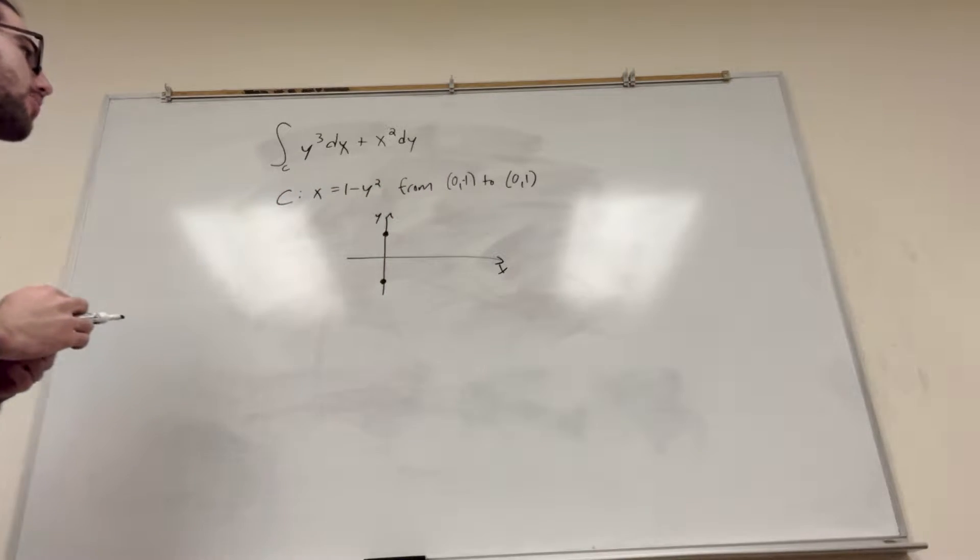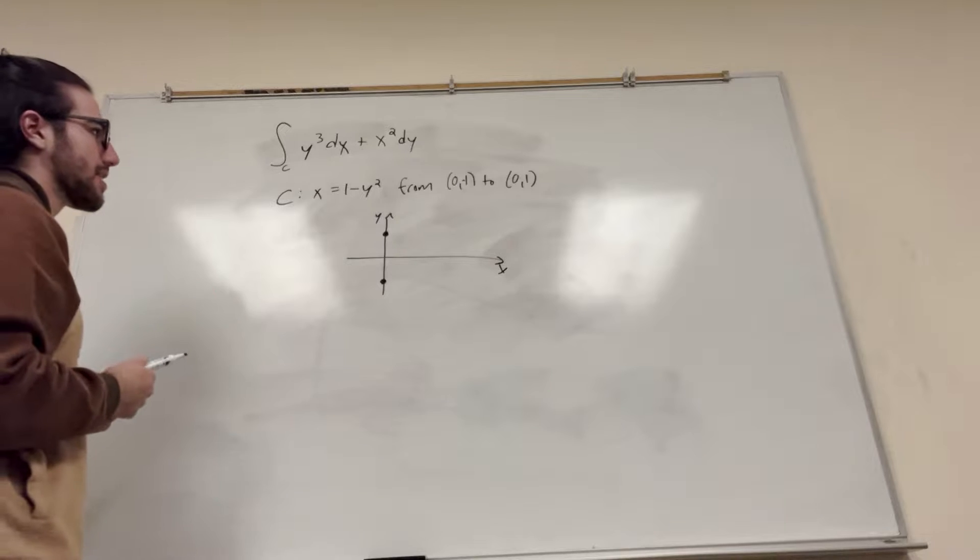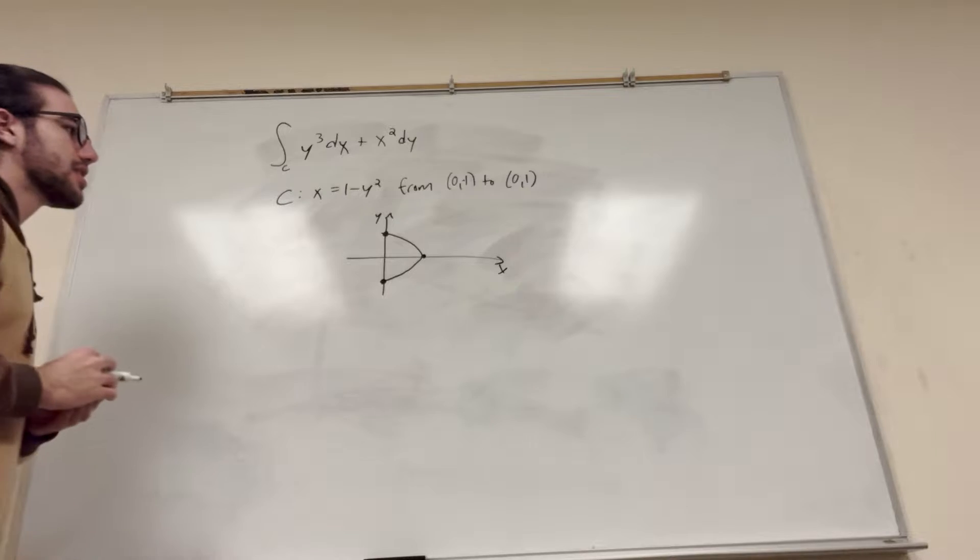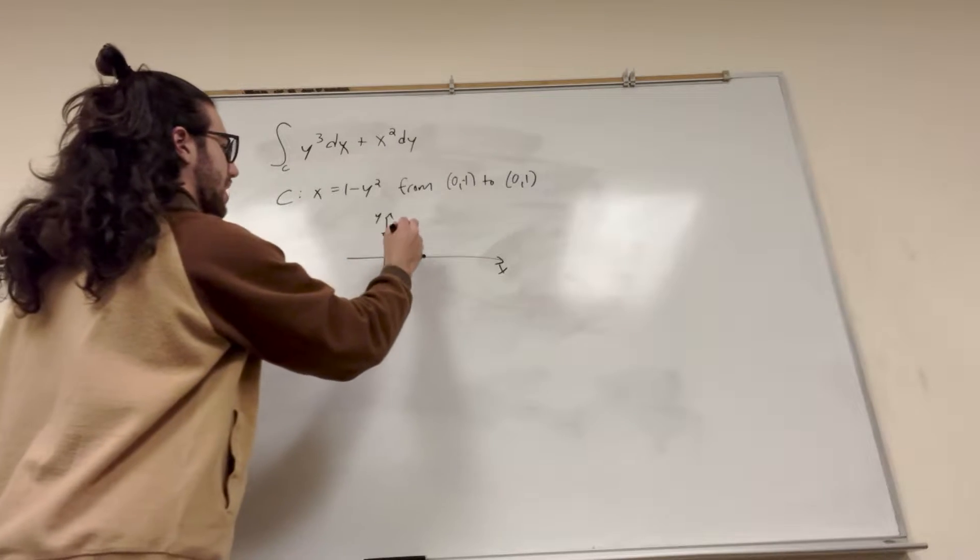And it's x = 1 - y². So if you plug in, like, y = 0, you're going to get x = 1. So it's going to be the parabola that kind of looks like this, right? And it goes this way, so don't forget about that.